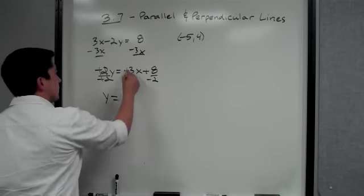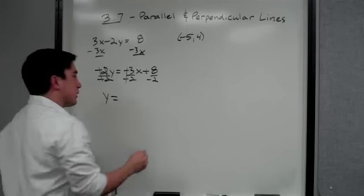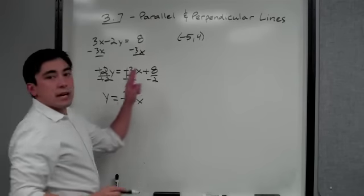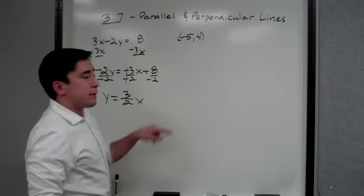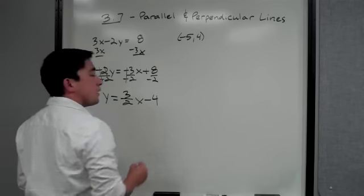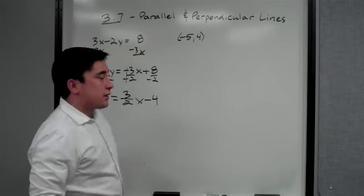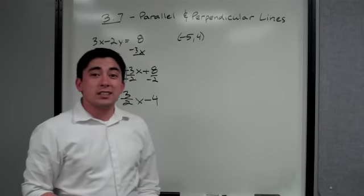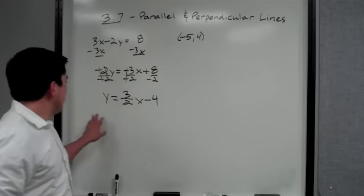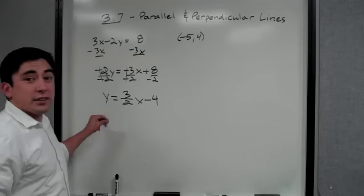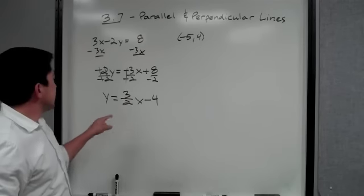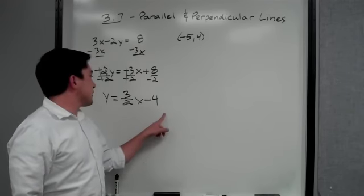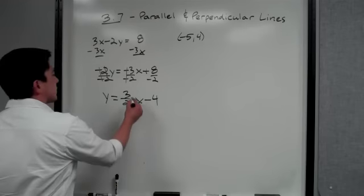After dividing by negative two, the negatives cancel on the y-term, leaving us with y equals three-halves x minus four. So the slope of the given line is three-halves. We want the slope that is perpendicular to that, which is the negative reciprocal.